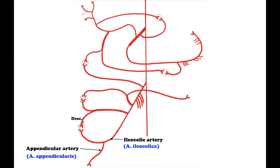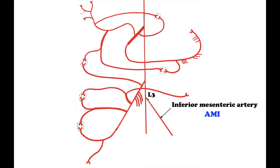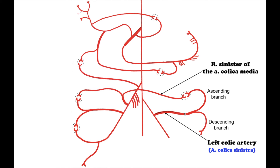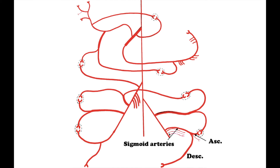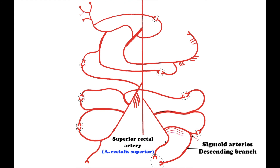The inferior mesenteric artery, arteria mesenterica inferior, branches off at the level of the inferior edge of the third lumbar vertebra and passes downward and slightly to the left. Its branches include the left colic artery, which divides into an ascending branch anastomosing with the middle colic artery from the superior mesenteric artery, and a descending branch anastomosing with the sigmoid artery. The sigmoid arteries, two or three in number, run obliquely downward and to the left, anastomosing above with the left colic artery and below with the superior rectal artery. The superior rectal artery is a direct pelvic continuation of the inferior mesenteric artery and divides into two branches which descend one on either side of the rectum.